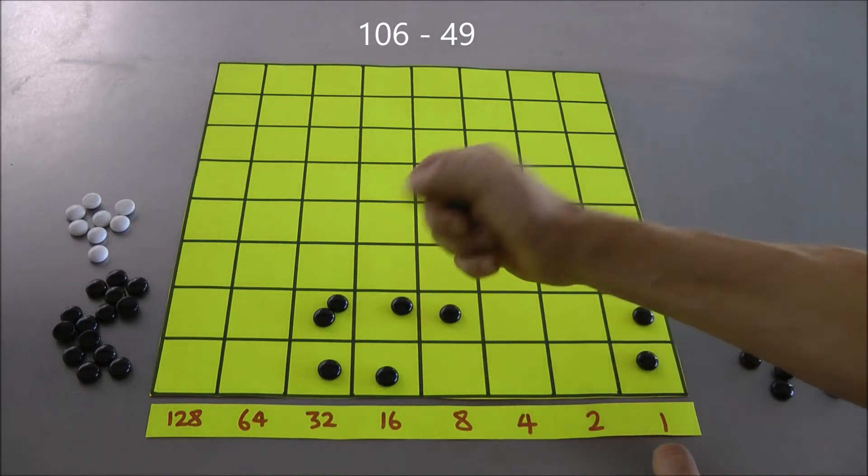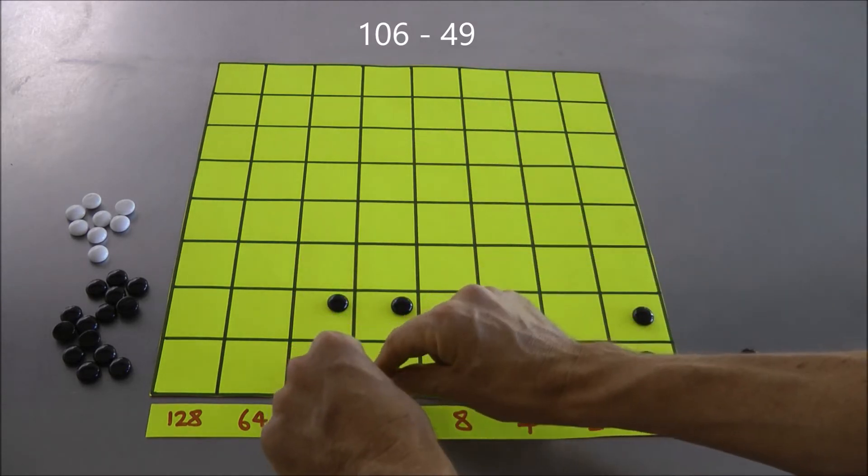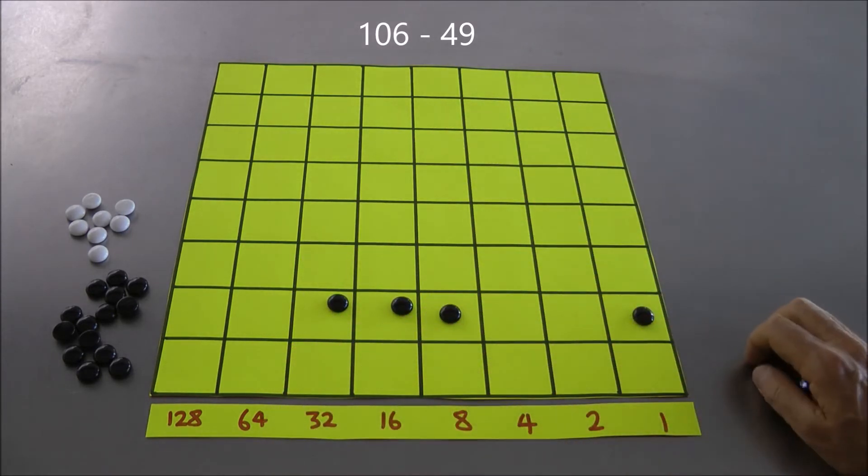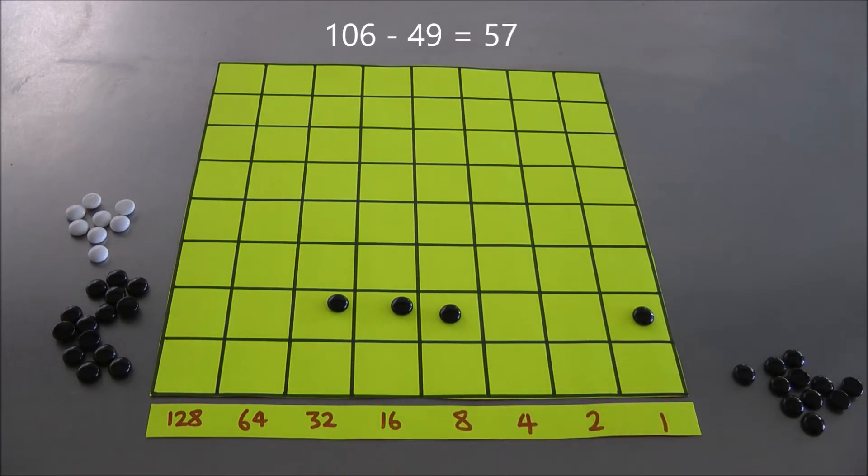Take one from there, one from there, one from there. That is, I actually taken away 49, so I get rid of the 49, and I'm left with that answer. And what is that answer? Let's see, it's a 48 plus 9, it's 57. 106 take away 49 must have been 57. Alright, grand.